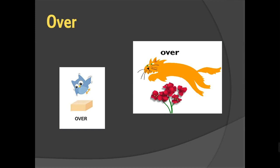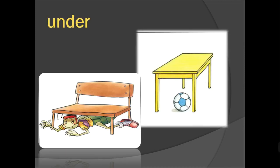Next we have under. Look at the picture. What sentence could be here? Yeah, the ball is under the table. The bee, I think it's a bee, it's under the bench.